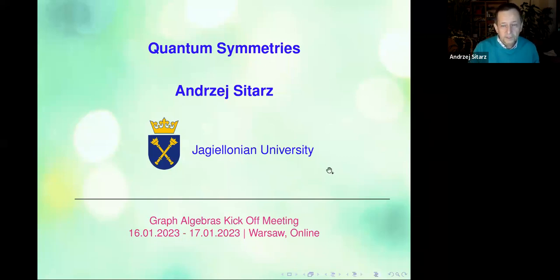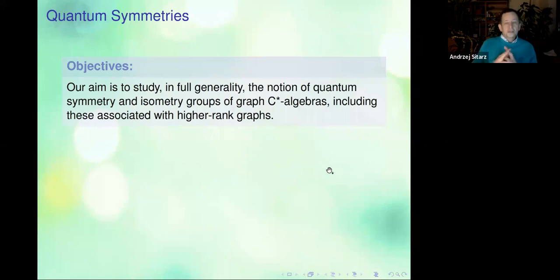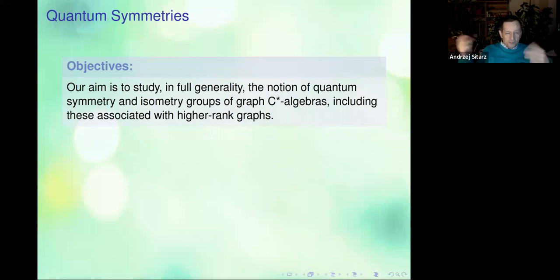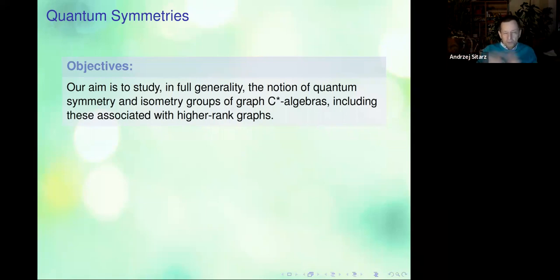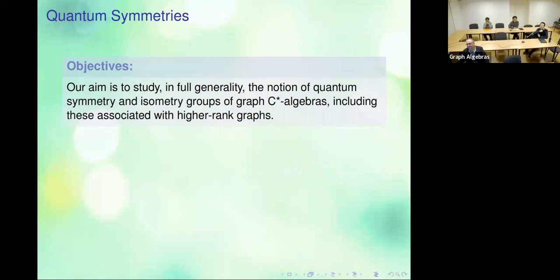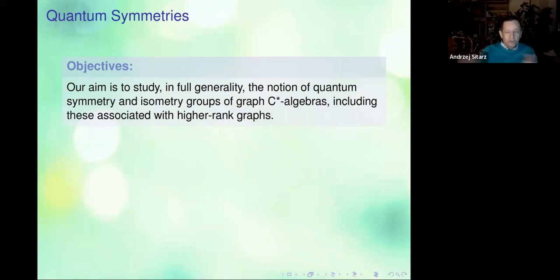So let me move to the objectives. This is the abstract of this chapter: the aim is to study in full generality the notion of quantum symmetry and isometry groups in graph C*-algebras, including Kyan-Ran graphs — basically all the graph C*-algebras that we can work with.